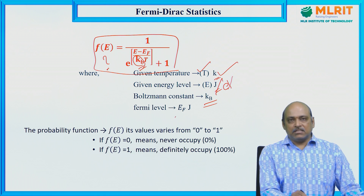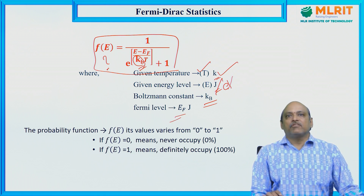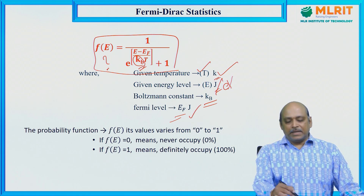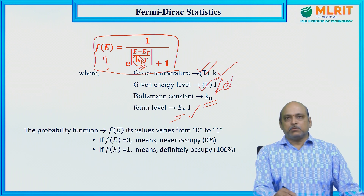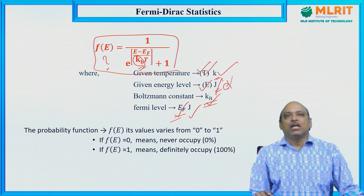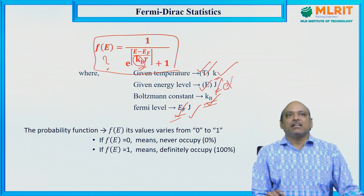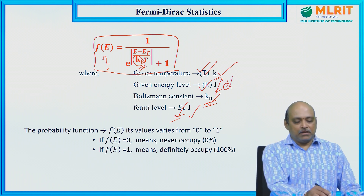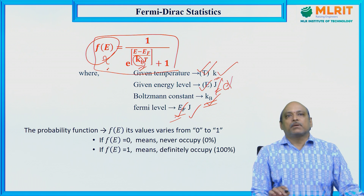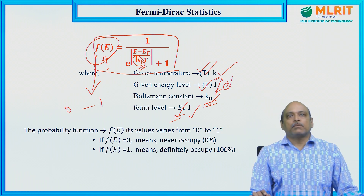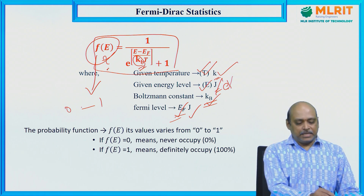If you know the values of T, E, K_B, and EF, you can substitute them into the equation to find the probability of occupying electrons at a particular energy level. The probability function F(E) varies from 0 to 1, where 0 is the minimum and 1 is the maximum value.